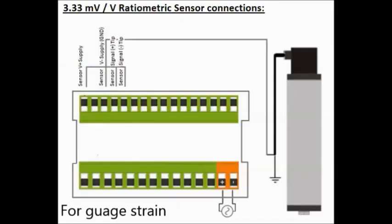And this is 3.33 mV per volt ratiometric sensor connection and for gage strain.